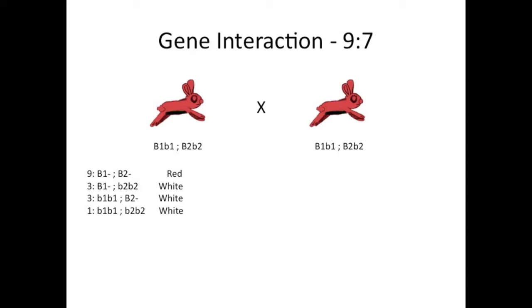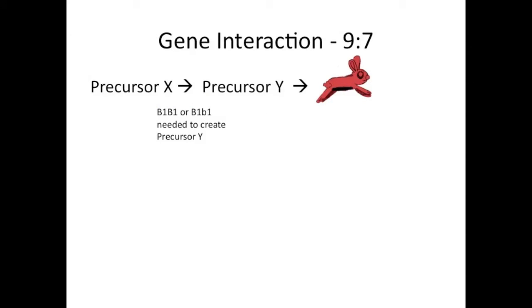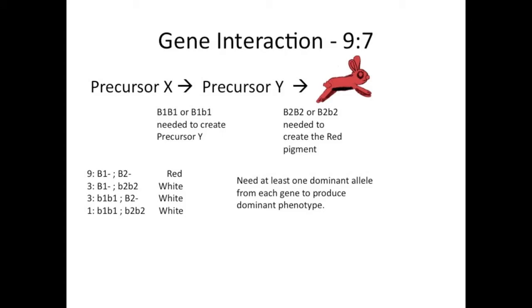How do you explain why they would all become white? The genes must be interacting — not meaning that the genes are linked, just that they interact in the same pathway. To get from precursor X to precursor Y, at least one dominant B1 allele is needed. The same goes for getting from precursor Y to the red color. In either case, at least one copy of the dominant B1 or B2 allele is needed to produce red color. If the pathway cannot proceed due to homozygous recessive B1 or B2, then by default the bunny will be white.